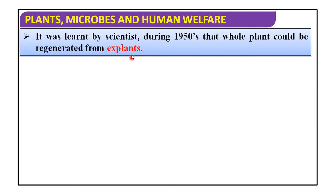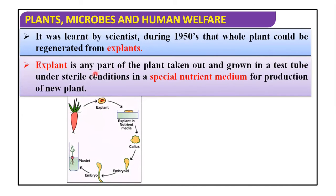Scientists found, during 1950, that a whole plant could be regenerated from the explant. What is an explant? An explant is any part of the plant — any part of the plant. It is taken out and grown in a test tube under sterile condition. Sterile means a very safe condition where there is no growth of harmful microorganisms.